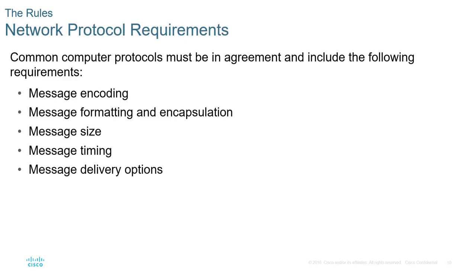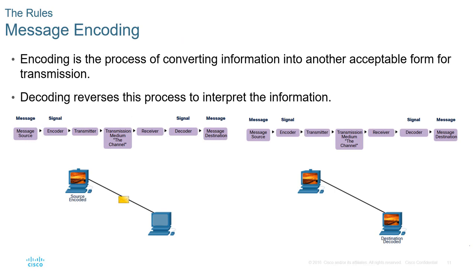In network or digital communication, similar things must be agreed upon. We have to talk about how data is going to be encoded and decoded, the formatting and structure, the size of communication — how large a chunk of data can be sent on a media — and the timing on the media. Encoding is the process of converting information into another acceptable form for transmission. Decoding is the reverse process: encoding converts it, and decoding converts it back.